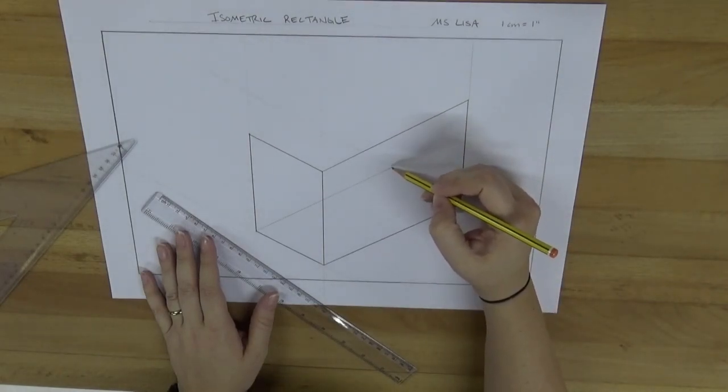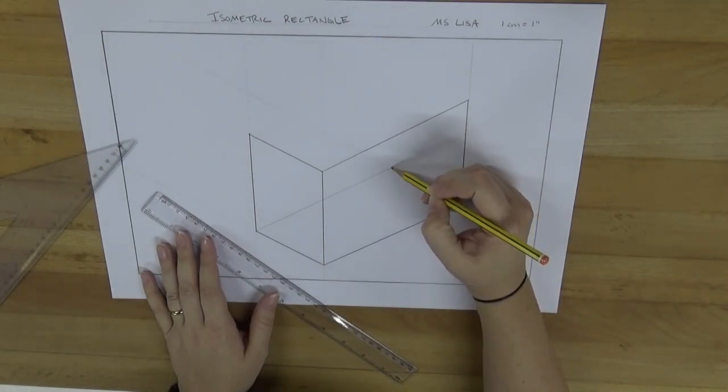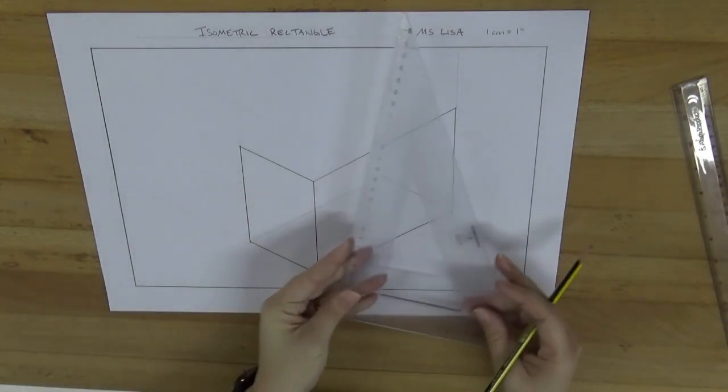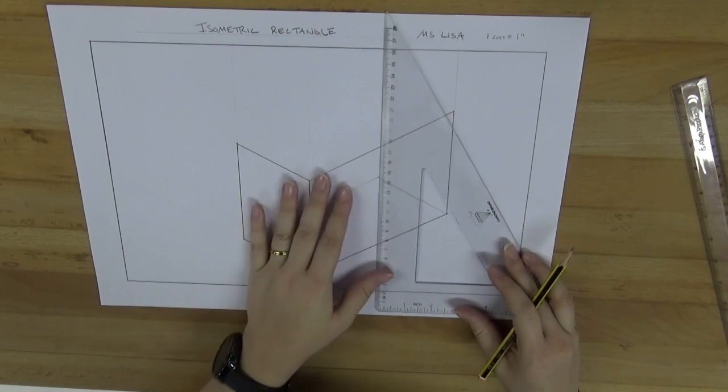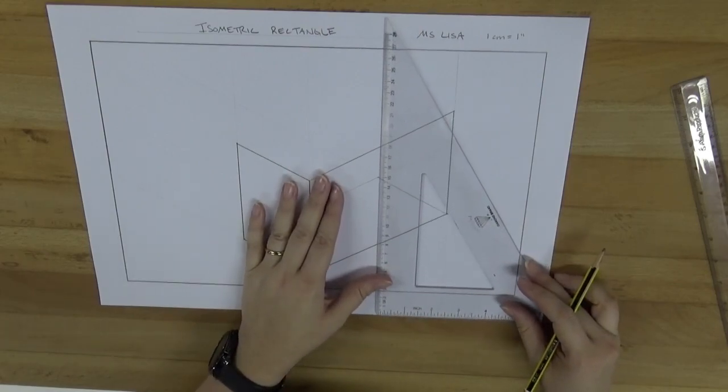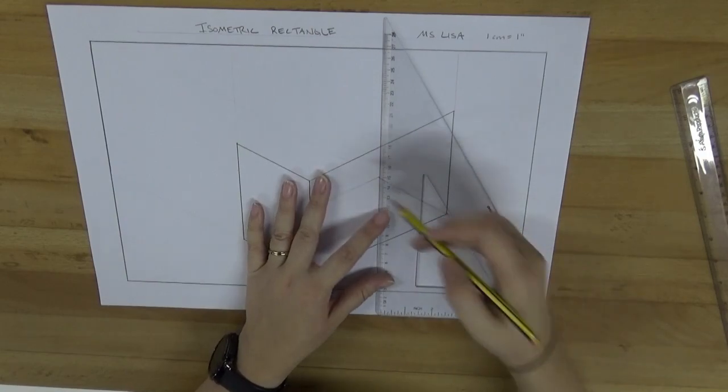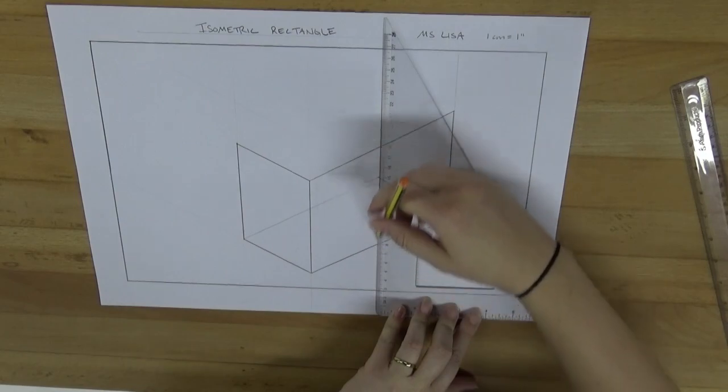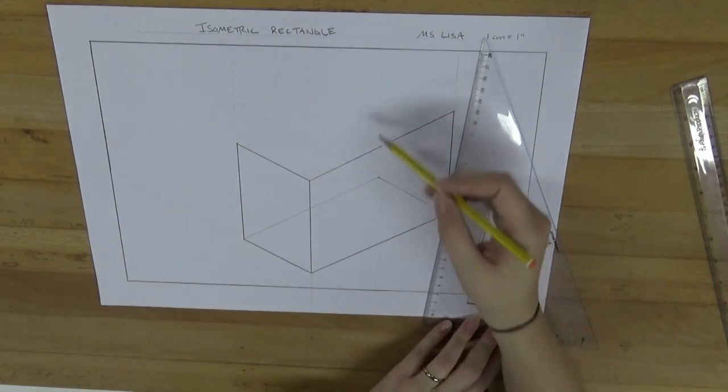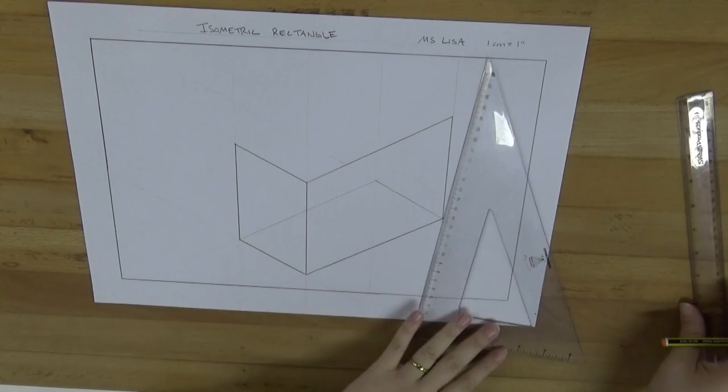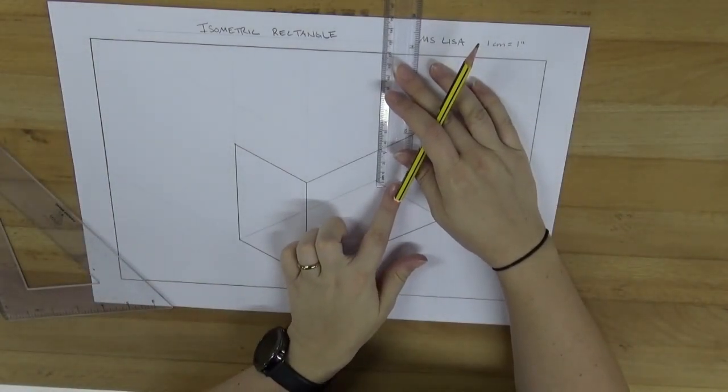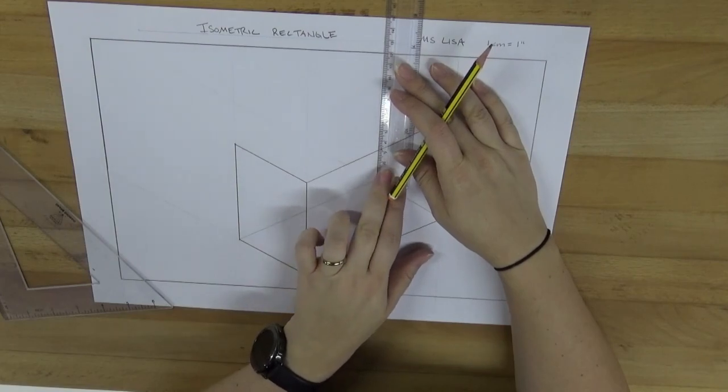And from this point right here, that's where you go 10 centimeters up from. So we need to have another vertical line using our 90 degree side of our triangle, flat on the bottom, and then through this point right here. We're going to draw it straight up. Remember to draw your guidelines softly, not hard. Okay, so that goes straight up through there, and we're going to then use our ruler and measure 10 centimeters up. You cannot be lazy with this and just guess. I'll be able to tell that you didn't do it right.